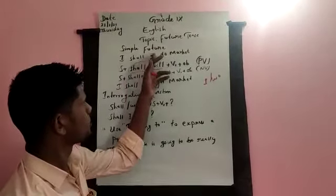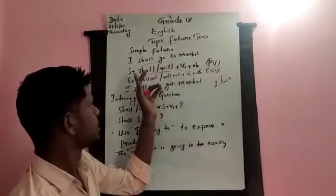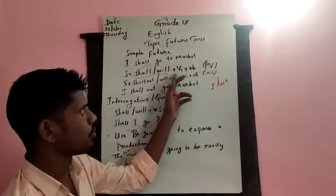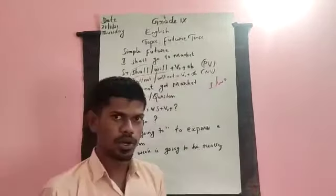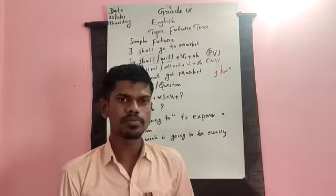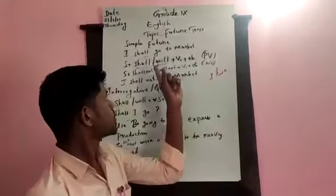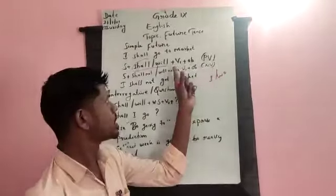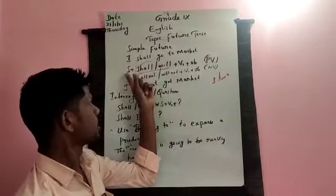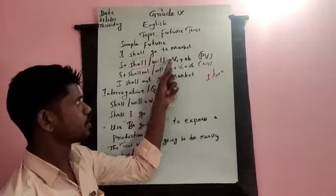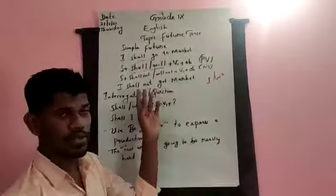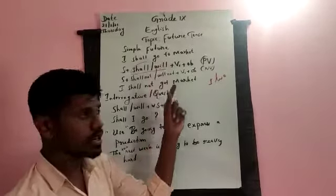Nothing is wrong if you write 'you shall' or 'he shall.' The structure for simple future positive is: Subject + shall/will + V1 (base form). For example, 'go' is the base form, 'went' is the past form, and 'gone' is the past participle. Here you use only V1 — the base form. You can observe: 'I' is the subject, 'shall' is used, and verb one 'go' is used.